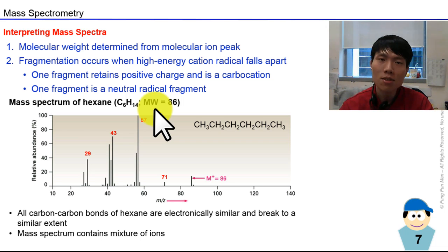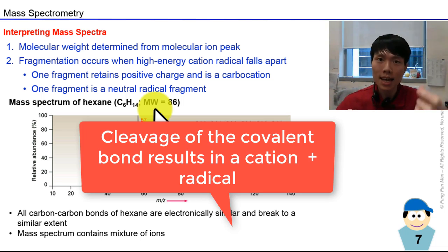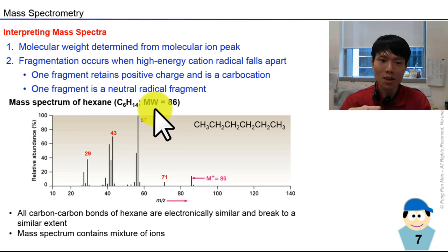You get scission and break into two fragments. Normally you have a cation and a radical. Which one do we detect? Cation, not the radical. It could be random which fragment becomes the cation. Because there's so much randomization of cleavage and fragmentation, a mass spectrum is characteristic of a molecule and is inherently different from different compounds.